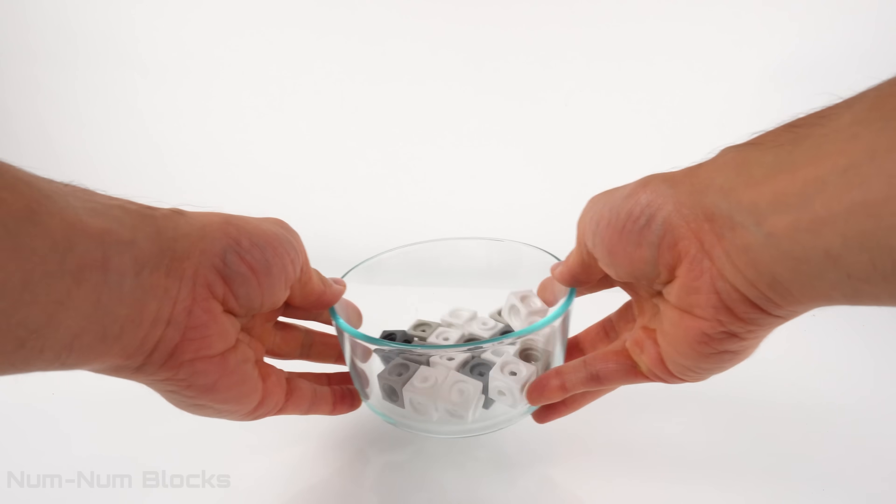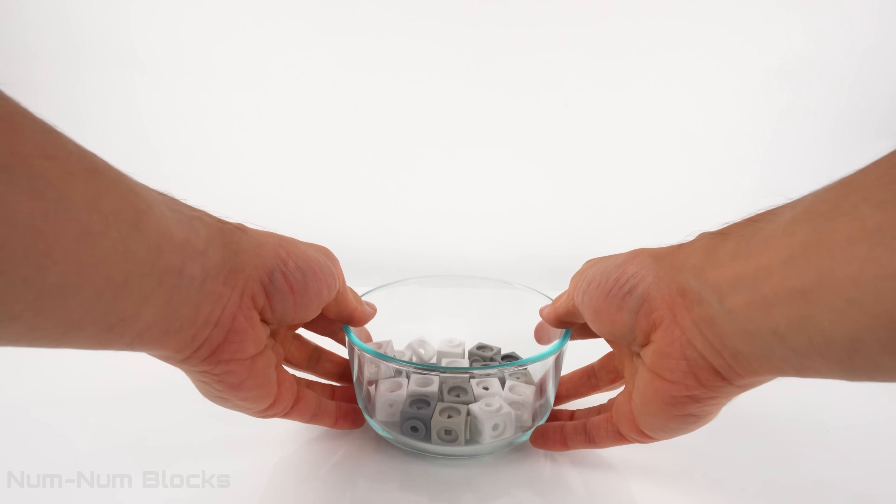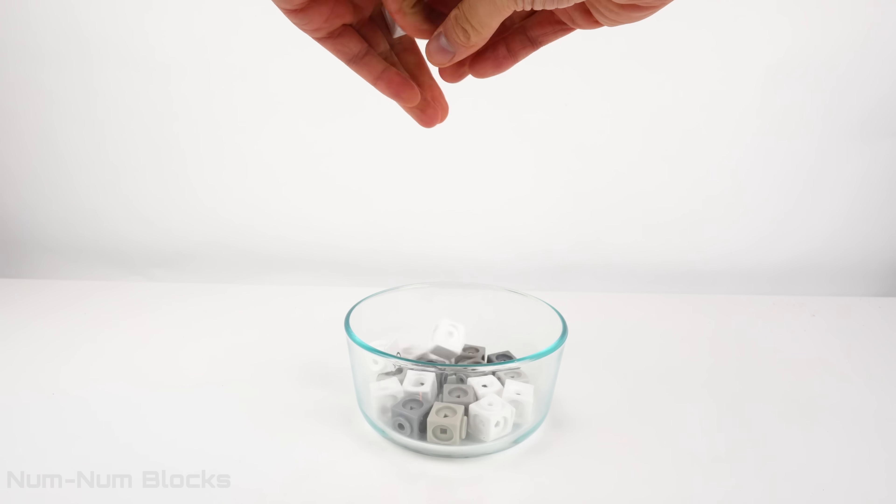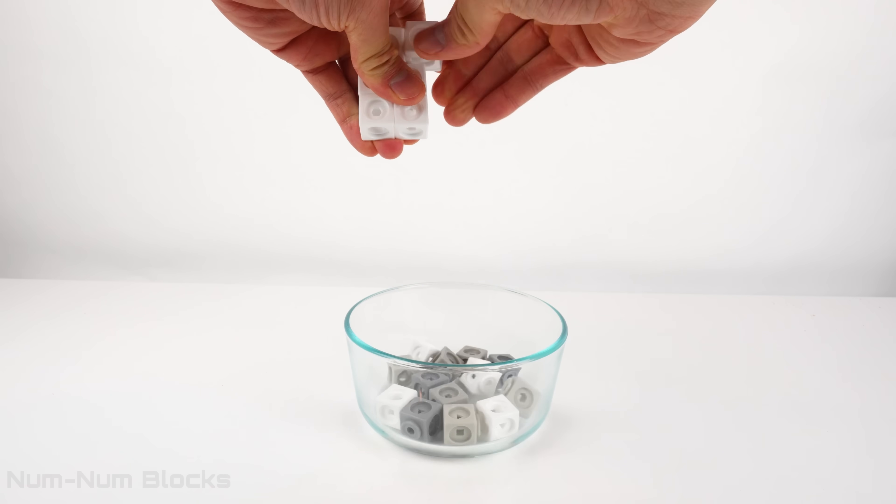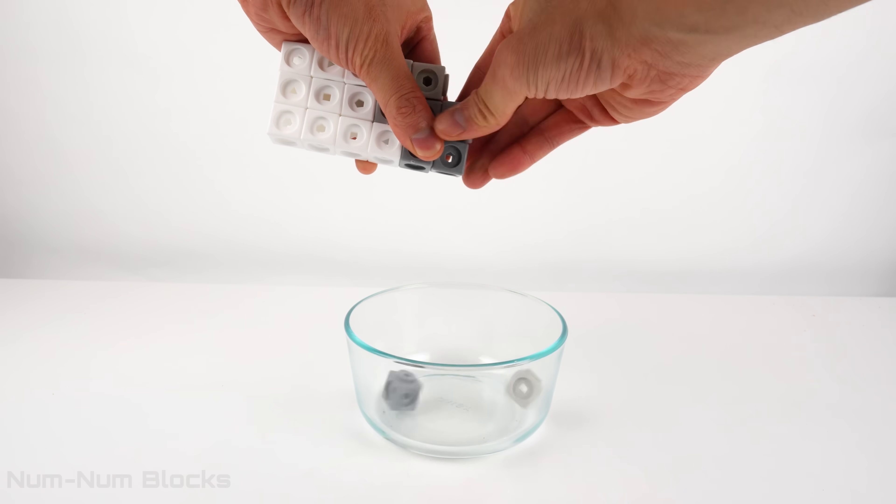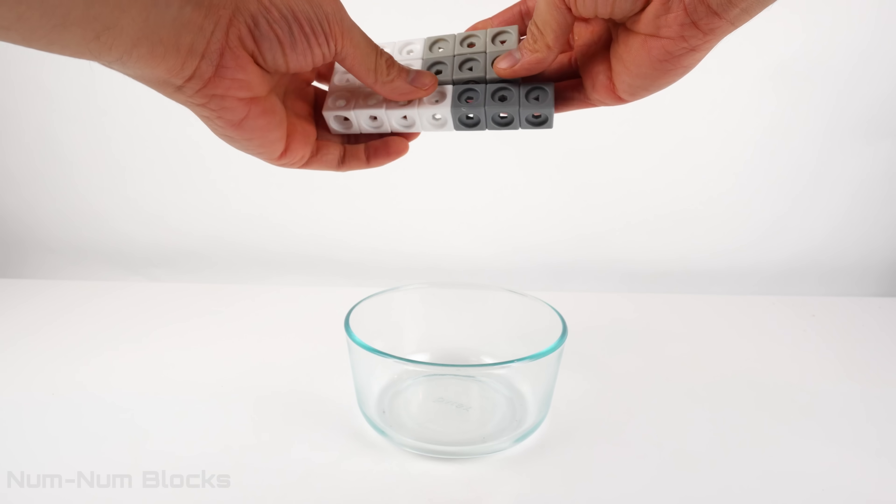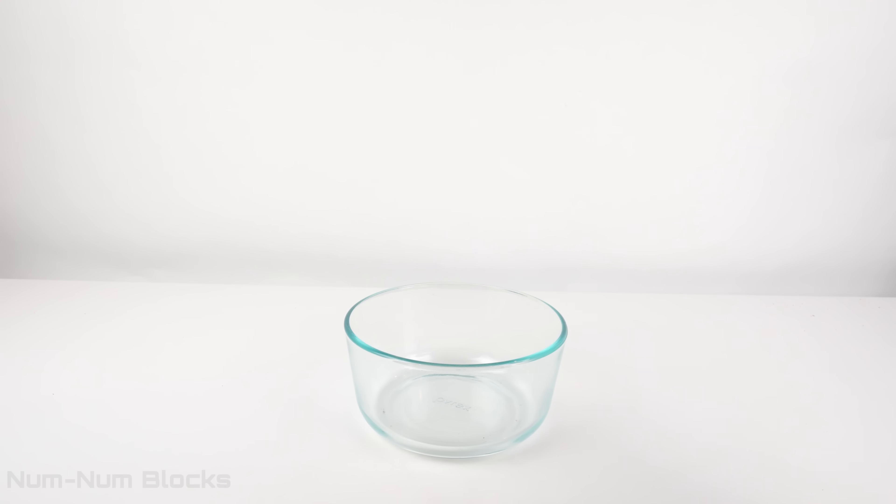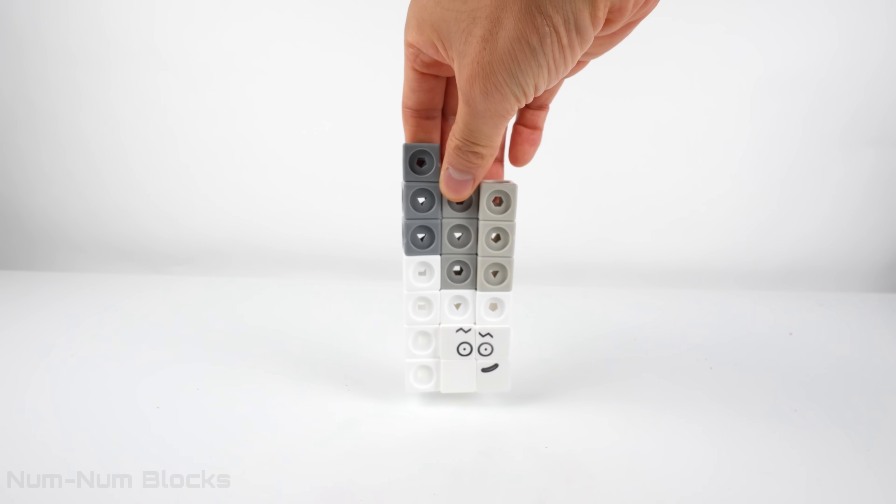Now it's time to rebuild this number block. Let's start with the white blocks. It looks like we're building a 3x6 rectangle, but with one extra block. 19! We built 19. Let's place 19 in the center.